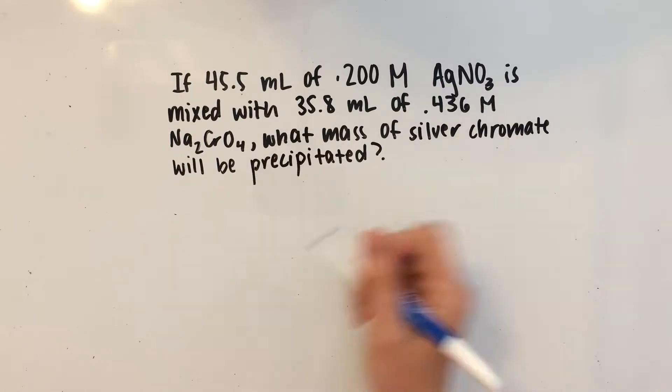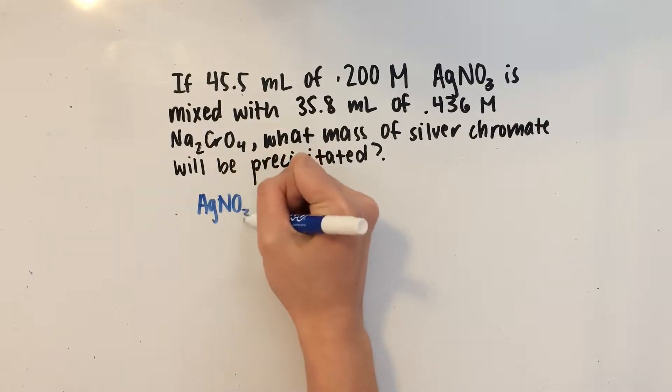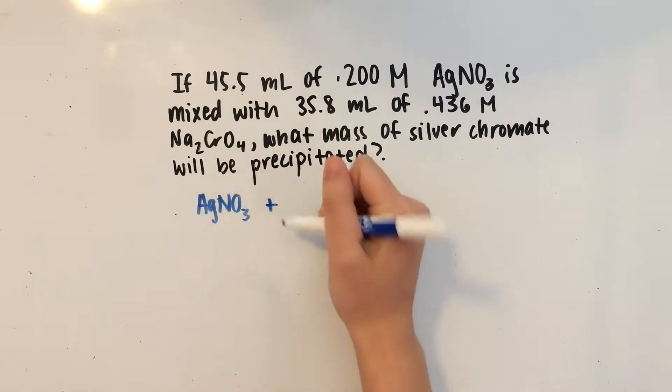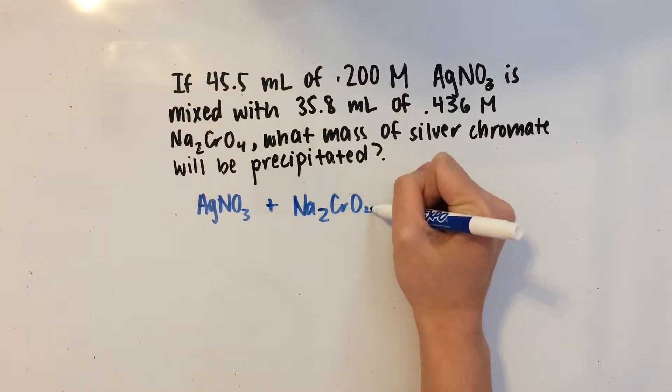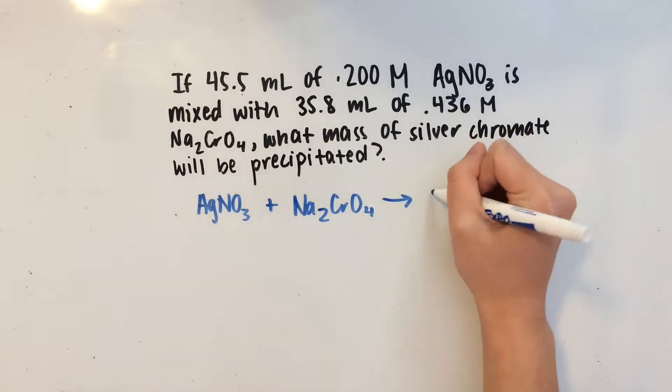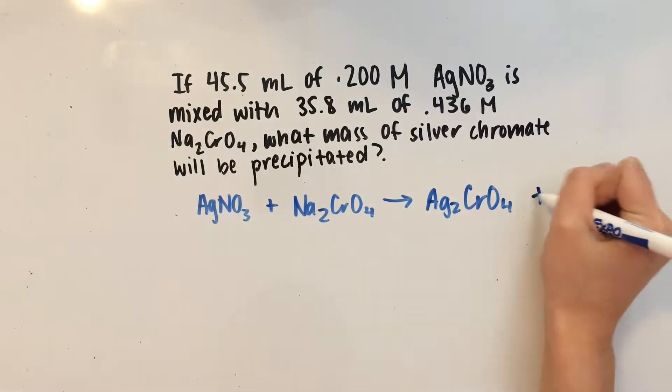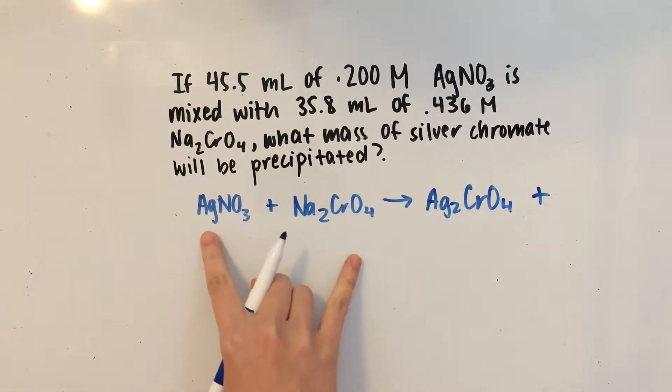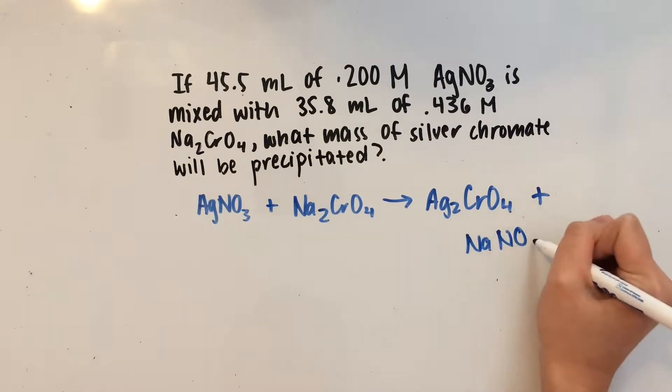Let's start out with the balanced equation. We have AgNO3, and the other reactant is Na2CrO4. And that's going to yield silver chromate, which is Ag2CrO4. And the other product, since these two ions are reacting, these two ions are also going to react. So that's going to be NaNO3.